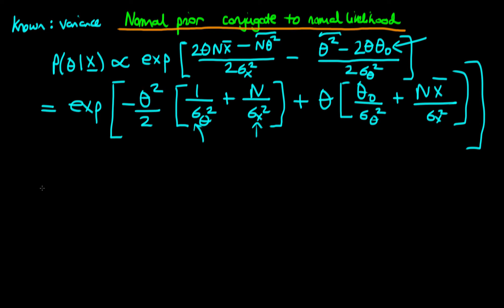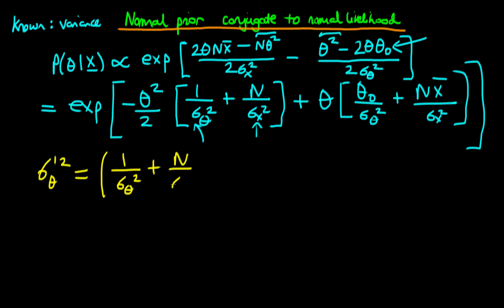Now what we're going to do is a bit of a trick. We're going to introduce a new parameter, which I'm going to call sigma prime theta squared, which is equal to 1 over sigma theta squared plus n over sigma x squared, and it's this whole term to the power minus 1.